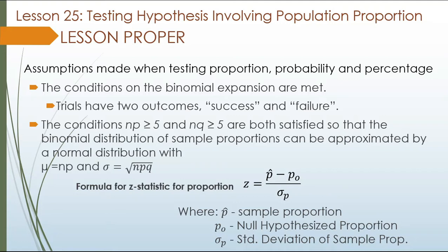In the previous two lessons, our null hypothesis was in terms of numerical value. Here, it is in terms of proportion. So expect that when dealing with proportion, the value is less than 1 — it is in decimal form. Take note of that, including our sample proportion or p-hat.